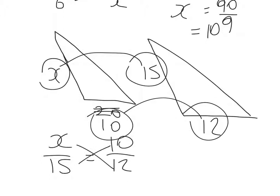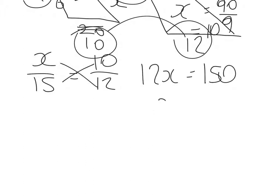Again I can cross multiply. 12 times x is 12x equals 10 times 15 is 150. x equals 150 over 12, and x is equal to 12.5.